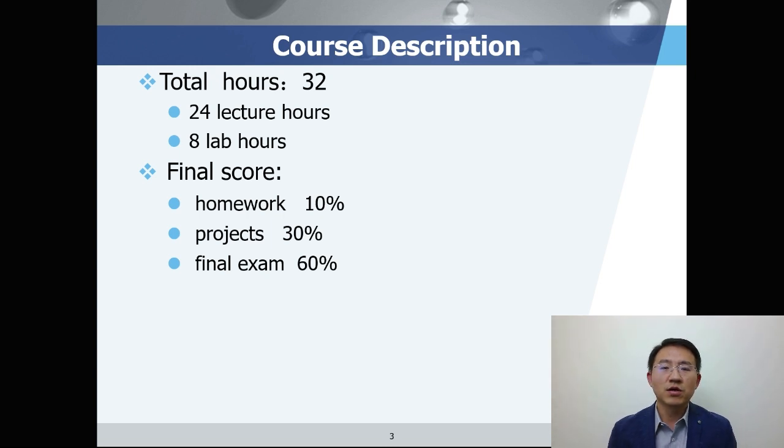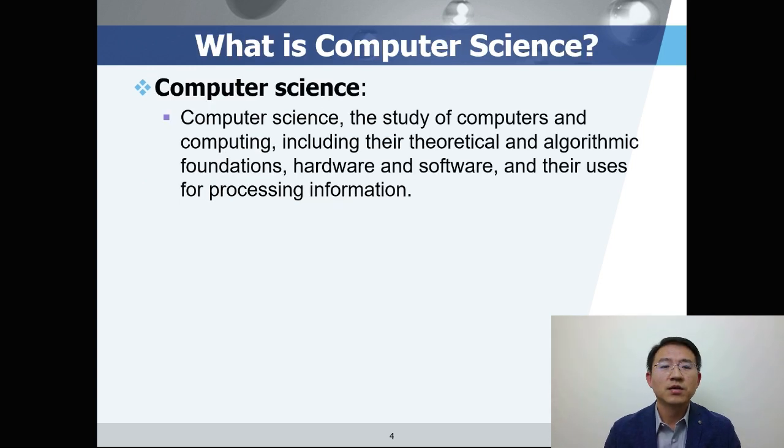The course will talk about computer science. What exactly is computer science? Computer science is the study of computers, of course, and also the computation methodology, including the theoretical and algorithmic fundamentals, hardware, software, and how to solve problems using a computation way. This is the range of computer science.